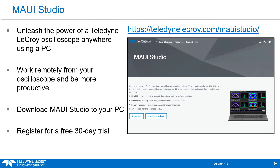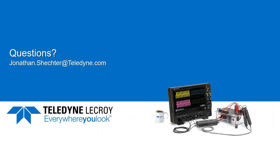If you liked the oscilloscope examples in this webinar, they were all done in Maui Studio. You can download Maui Studio onto your PC and register for a free 30-day trial to try out those examples and reconstruct some of the waveforms shown. That concludes part four of this webinar series. Feel free to email me at jonathan.shechter@teledyne.com with any questions. Thank you for joining and I hope to see you at the next one.